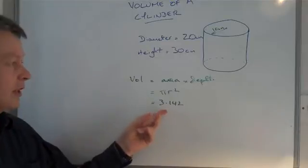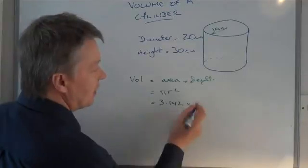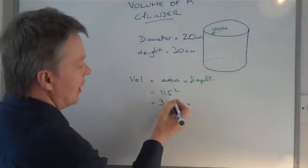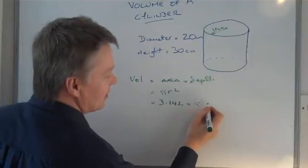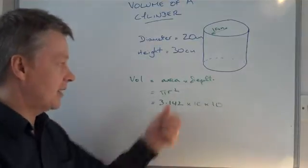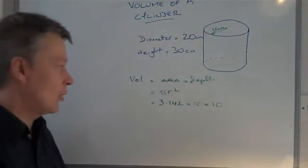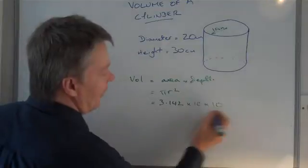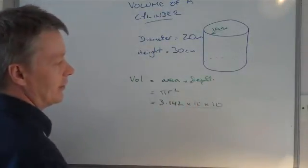But more recently and more usually 3.142. So the radius of this particular area at the top is, sorry, 10 centimeters, and it's radius squared, so 10 times 10. Squared means radius times radius. That will give you a value of the area of the circle.